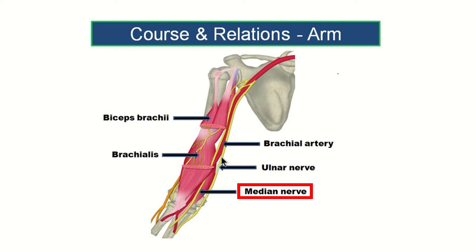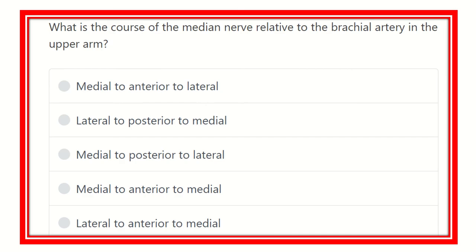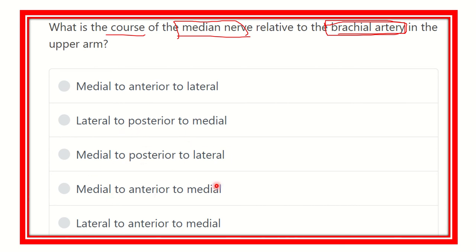Hello everyone, welcome to another lecture question and answer session for emergency system. The question is: what is the course of the median nerve related to the brachial artery in the upper arm? The options are: medial to anterior to lateral, lateral to posterior to medial, medial to posterior to lateral, medial to anterior to medial, and lateral to anterior to medial.